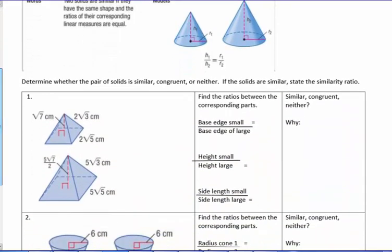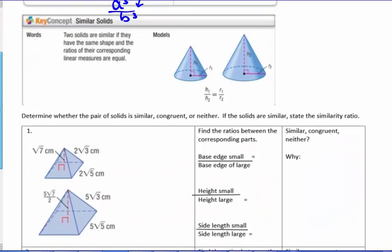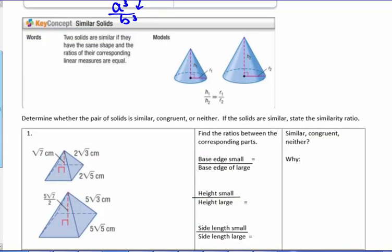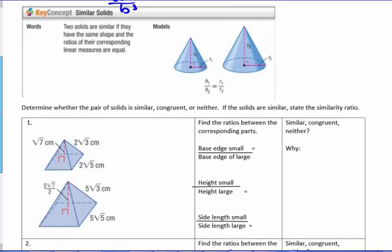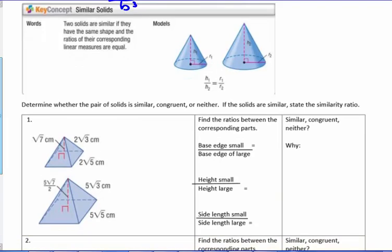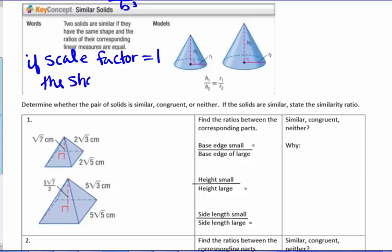Solids are similar if their corresponding parts are proportional. For example, in a cone, we would compare the radius of the small cone to the radius of the large, and the height of the small cone to the height of the large. If the scale factor of similar figures equals one, then the shapes are actually congruent.